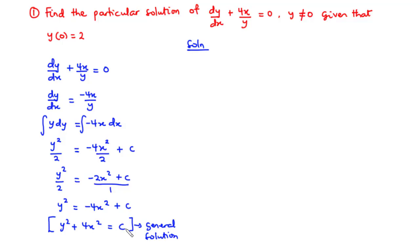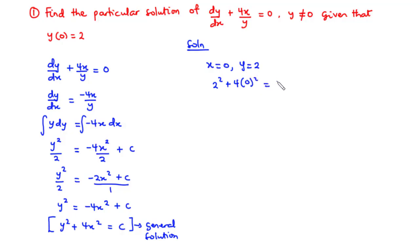The general solution contains arbitrary constants — here we have the constant c. Using the initial condition, we can find the particular solution. Given x equals 0 and y equals 2, let's plug in these values: 2 squared plus 4 times 0 squared equals c. So 4 plus 0 equals c, giving us c equals 4.